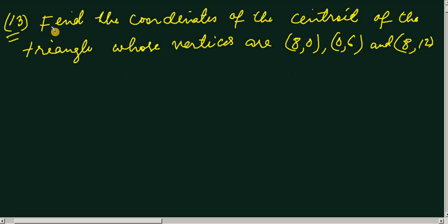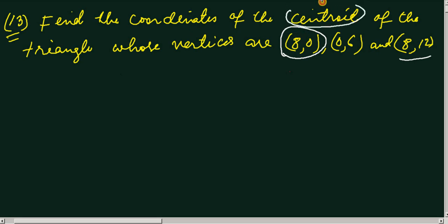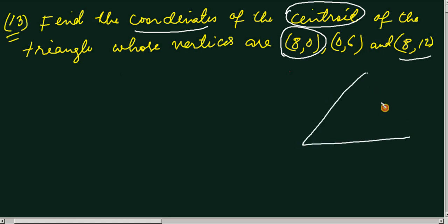The equation is: find the coordinates of the centroid of a triangle whose vertices are H(0,0), (0,6), and (8,12). The triangle has coordinates H(0,0), (0,6), and (8,12). We need to find the coordinates of the centroid of this triangle.